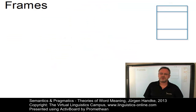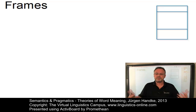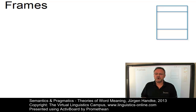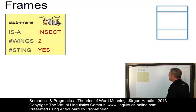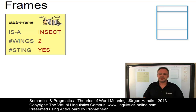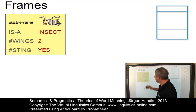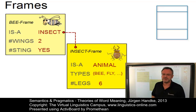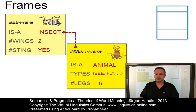Frames are conceptual structures that provide a background of beliefs, experiences, or practices against which the meaning of words can be understood. They organize stereotype knowledge about an entity, event, or situation in a container structure consisting of attribute-value pairs. Here is a bee frame with three attribute-value pairs, where the isa attribute triggers a superordinate frame — the insect frame — and has access to its attributes too. The attributes can also have default values, such as particular colors, sizes, or actions. These default values are kept until there is contradictory evidence.